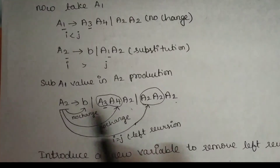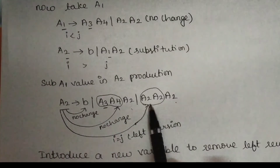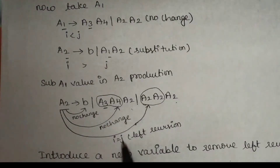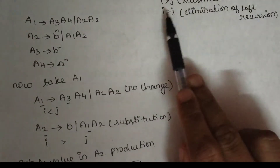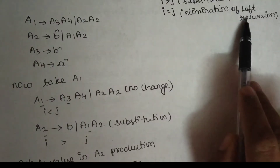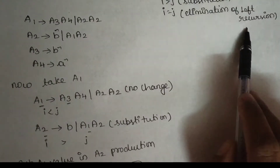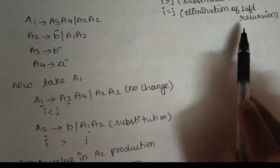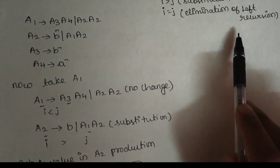Here is A2 and here is A2, so i equals j. i equal to j means the same value in the production — we have left recursion. If we look at the left recursion, we will eliminate it.